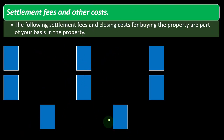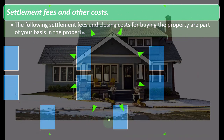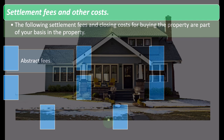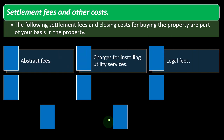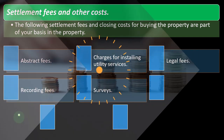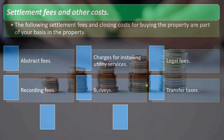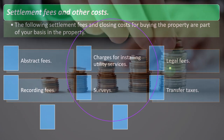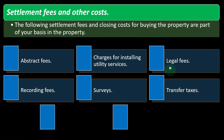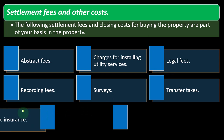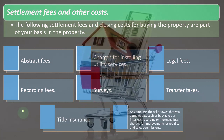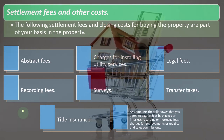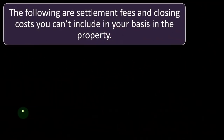Settlement fees and closing costs that are part of your basis include: abstract fees, charges for installing utility services, legal fees, recording fees, surveys, transfer taxes, title insurance, any amounts the seller owes that you agree to pay such as back taxes or interest, recording of mortgage fees, charges for improvements or repairs, and sales commissions. All this stuff that's part of the process of buying the property generally can't be expensed at purchase — it goes into the cost basis and is depreciated over the useful life.